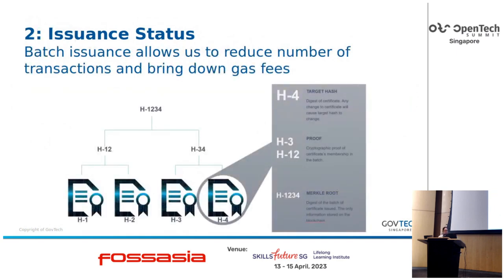Issuance does consume gas, which can be an issue if you're issuing many documents one by one. So we developed batching using Merkle trees — each document target hash is a leaf in the Merkle tree. We compute the Merkle root, which is stored in the open attestation document along with the proofs needed to confirm the document is part of that Merkle tree. For a single document that doesn't need batching, the target hash and the Merkle root are the same.